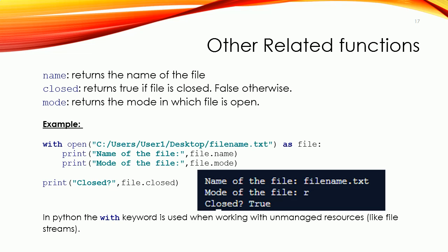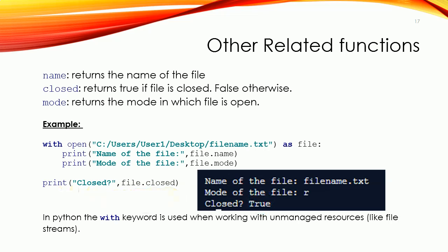In this example, we have the 'with' keyword. Why do we need 'with'? Using the with statement, you get better syntax and exception handling. The with statement simplifies exception handling by encapsulating common preparations and cleanup tasks. In addition, it will automatically close the file. In our example, we open the file, print the name, then print the access mode — which is 'r' since that is the default when no mode is specified. At the end, we check if the file was closed — it is already closed, even though we did not explicitly call close(), all thanks to the with statement.